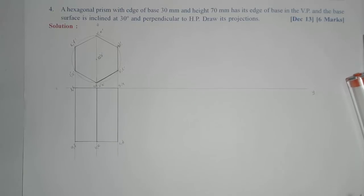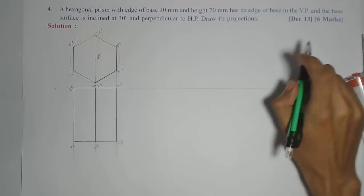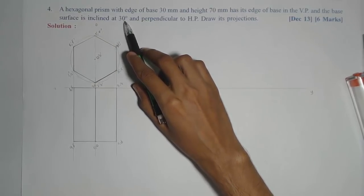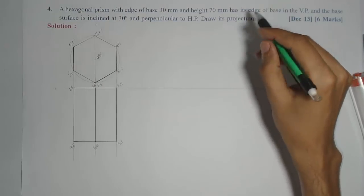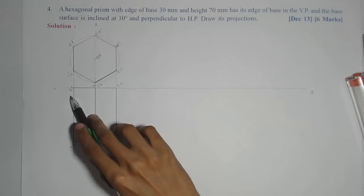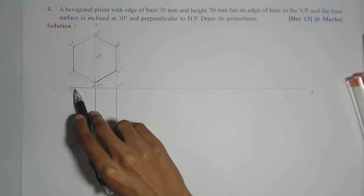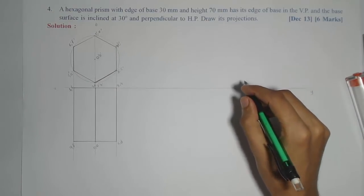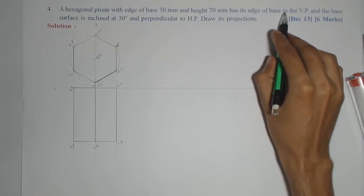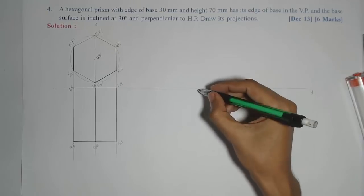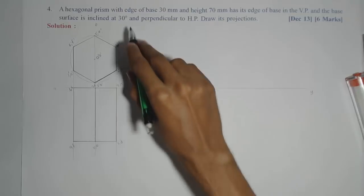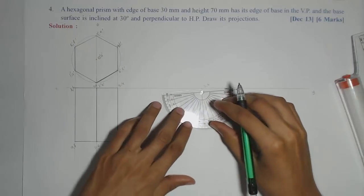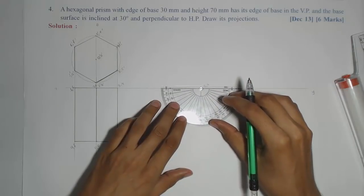Now for the next stage, we need to redraw this top view. The condition for redrawing is that the base surface is inclined at 30 degrees. In the previous problem the condition was given for the axis, but here it is given for the base surface which is lying on the VP. The base surface is 1, 2, 3, 4, 5, 6. That means this line I need to incline at 30 degrees in the next stage. Keeping edge 3-4 still in the VP — because one of the base edges should lie in the VP — I will rotate this base at an angle of 30 degrees. So I will keep 3-4 in the VP and measure the angle of 30 degrees to tilt the base at 30 degrees.